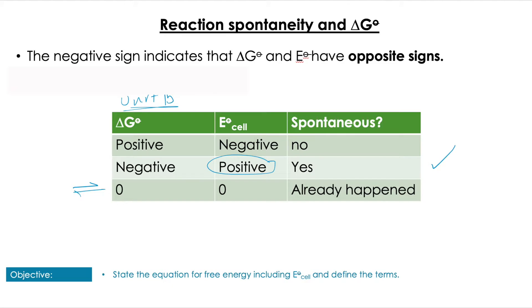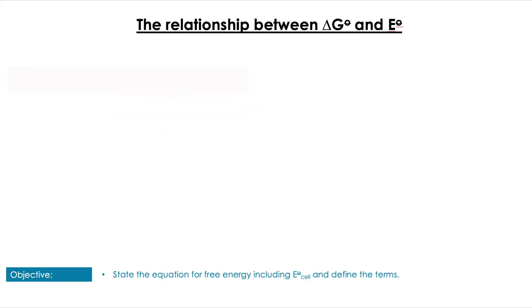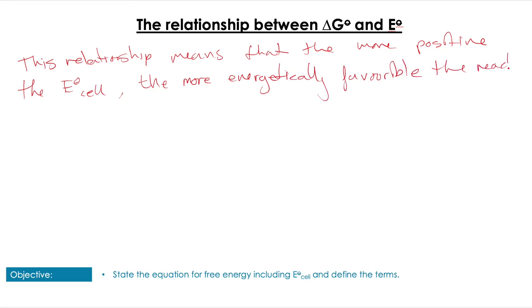We can link E°cell to ΔG°, and that's a powerful tool. This shows us that the more positive E°cell value, the more feasible the reaction is, the more energetically favorable it is. It also allows us to use a voltmeter as an indirect measure of Gibbs free energy. This is powerful because now we can use a voltmeter to measure something that can be in other cases quite difficult to measure.